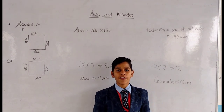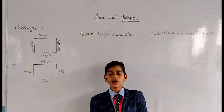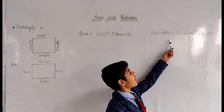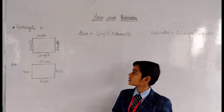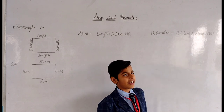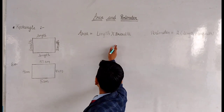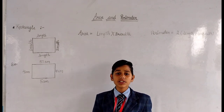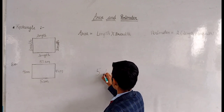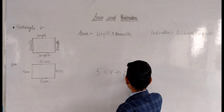So now we will learn about the formula for area and perimeter of a rectangle. The formula to find the area of a rectangle is length × breadth, and the perimeter formula is 2 × (length + breadth). Our length is 5 cm and our breadth is 4 cm. First we find the area: 5 × 4 = 20 cm².